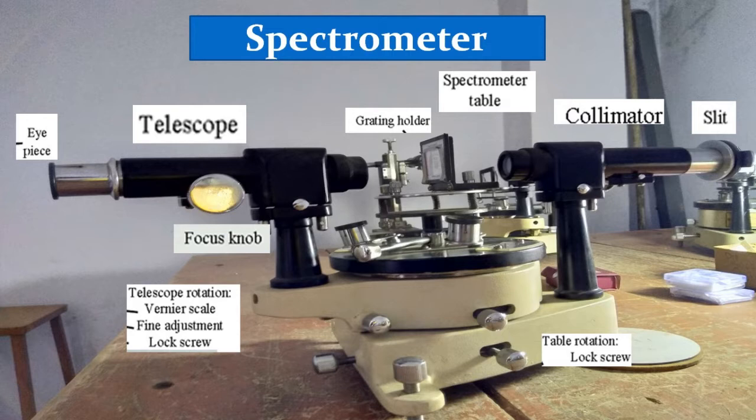It consists of basically three parts: the collimator, the prism table, and the telescope.